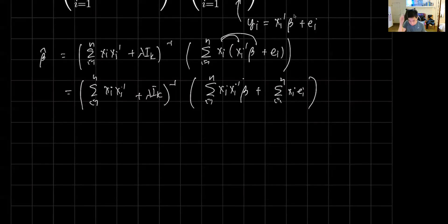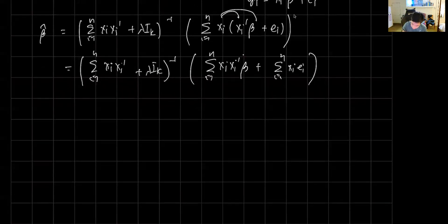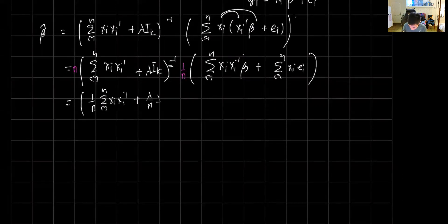From here, we're gonna do a slight manipulation. We're gonna multiply this by n and this one by 1 over n. So we're effectively multiplying one side by one, which doesn't change anything. We're going to move this inside. Because there's an inverse here, to move this inside we do 1 over n sum i equals 1 to n x i x i prime plus lambda over n i k inverse.